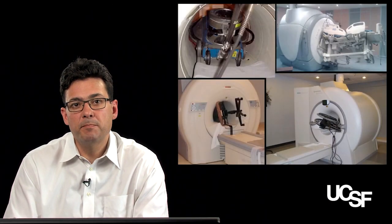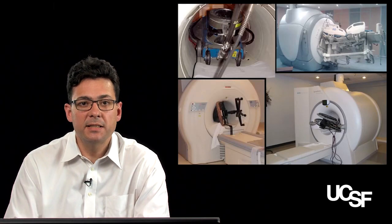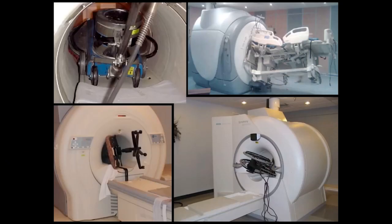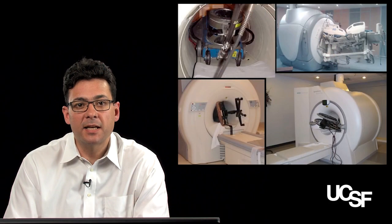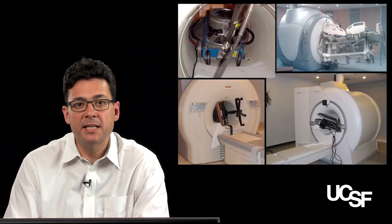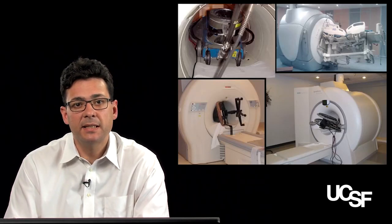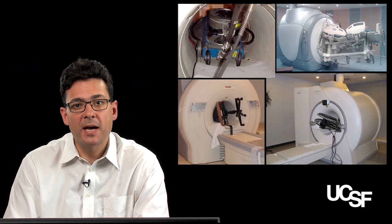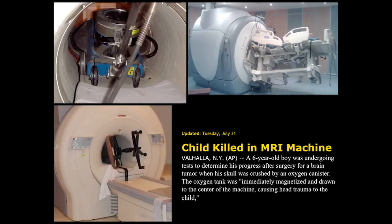Over the years, people forget that MRI scanners are always on, and so various metallic objects — floor cleaners, hospital beds, wheelchairs, office chairs — have flown into the magnet. This happens not infrequently. Once inside, it's virtually impossible to pull these things out. It's very bad when a patient is inside the scanner, and there have certainly been major injuries to patients when a metal object is brought close to the scanner.